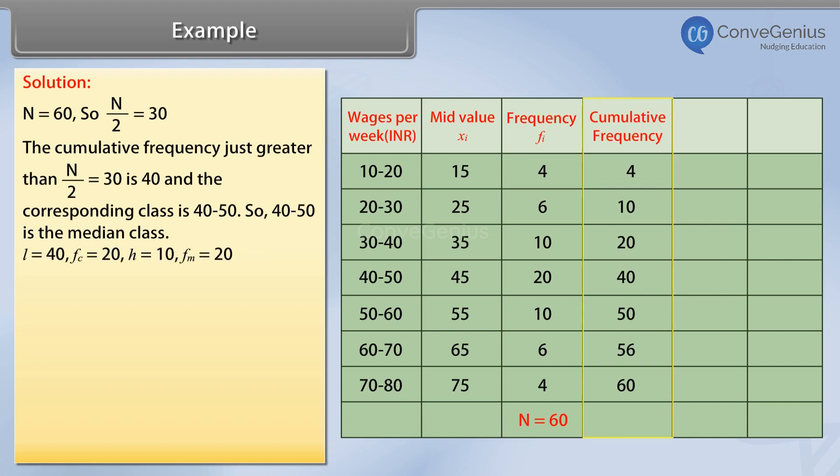After that, we find the median by using the formula: lower limit plus the difference between n/2 and cumulative frequency of the class just preceding the median class, divided by fm, multiplied by h. And it is found to be 45.